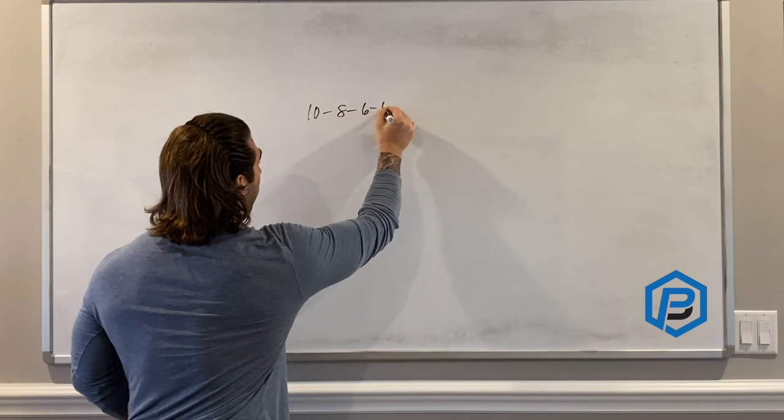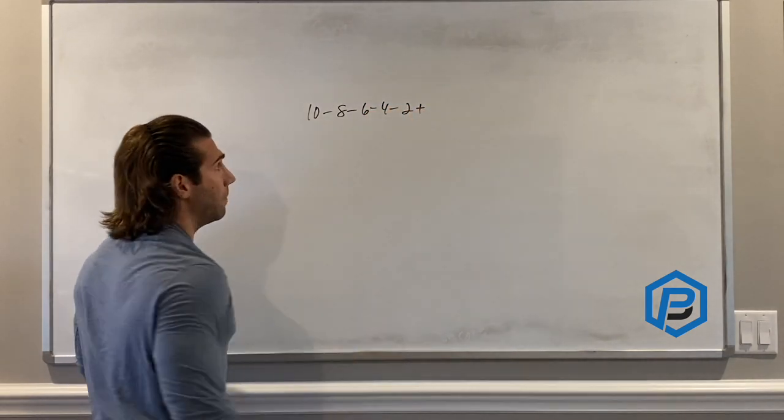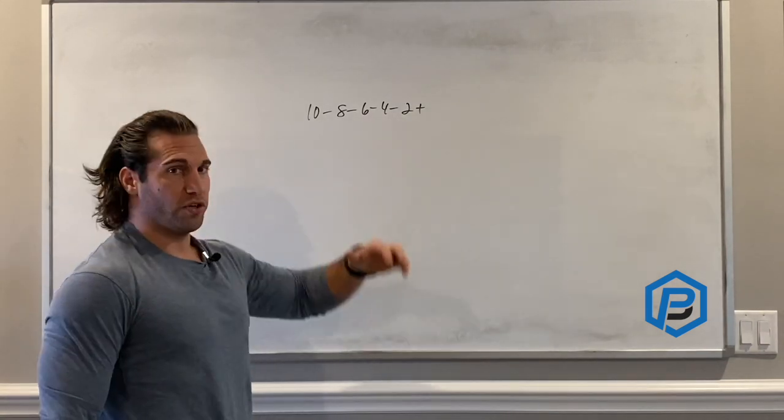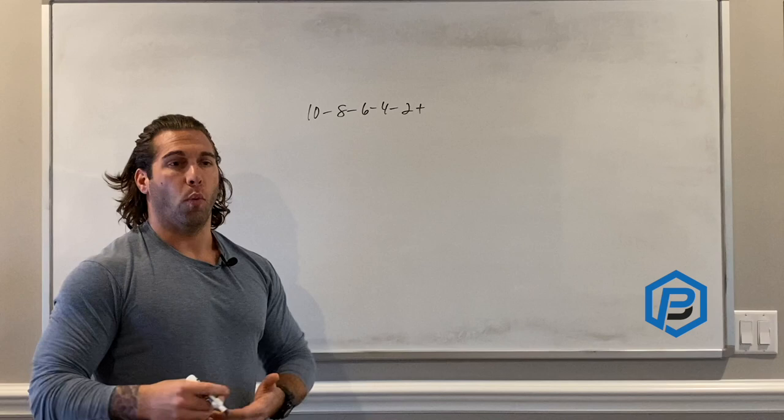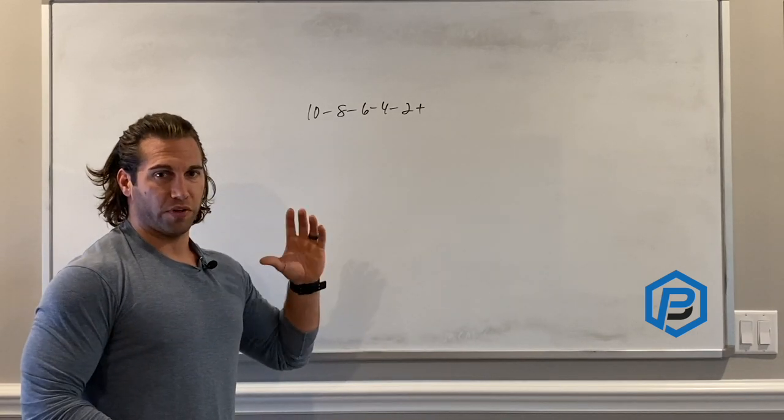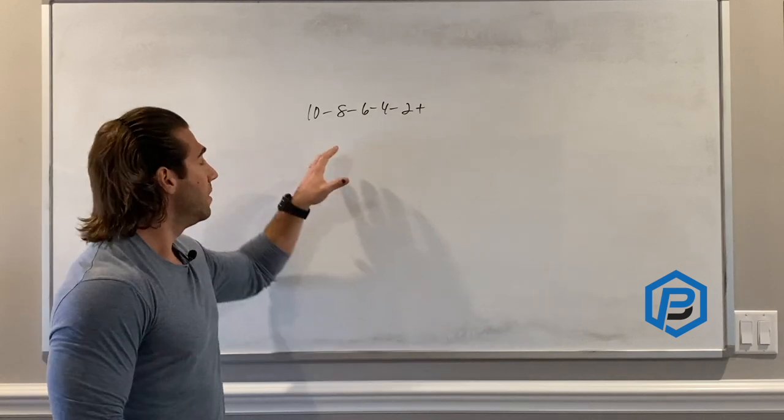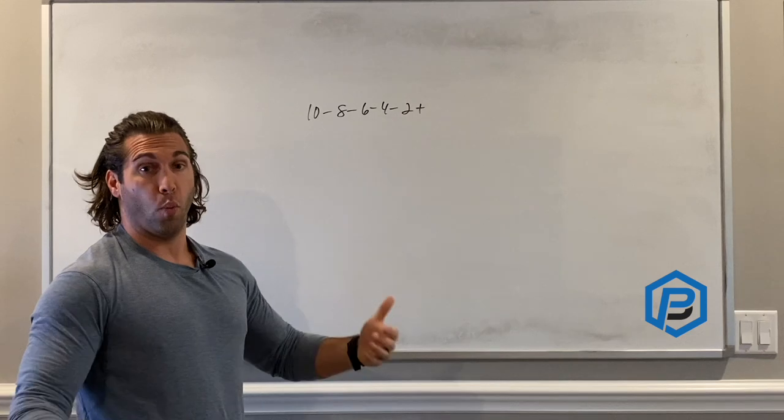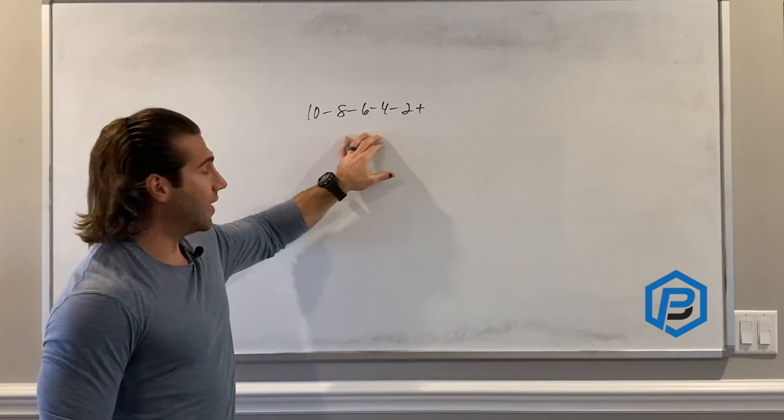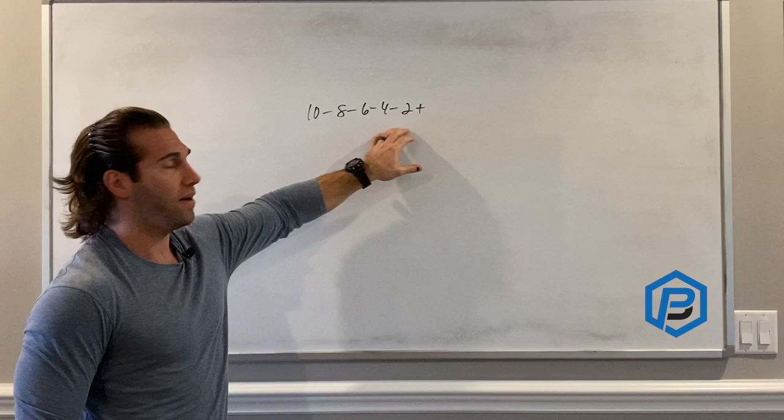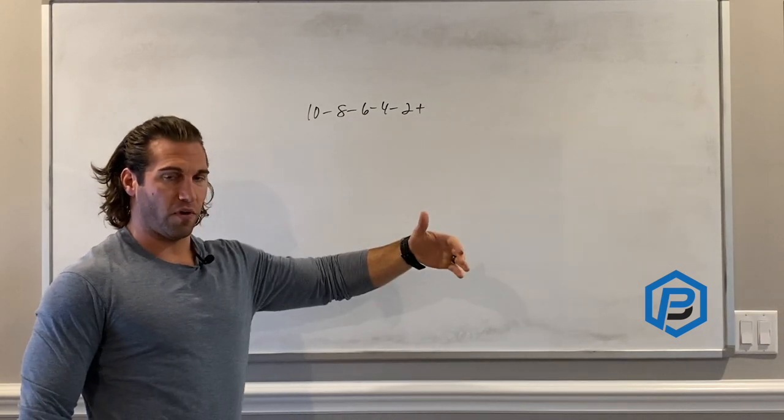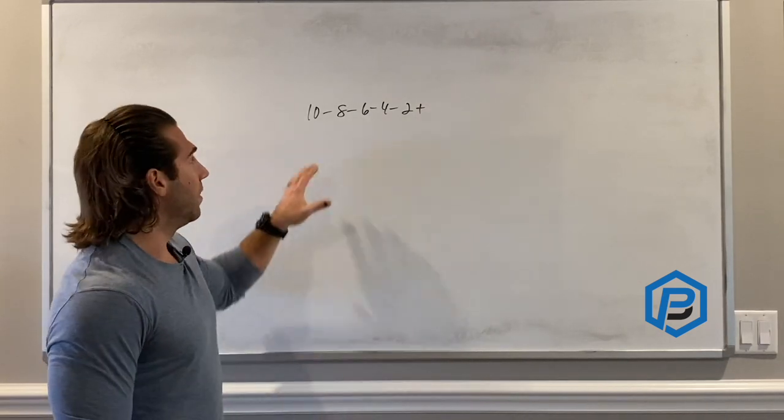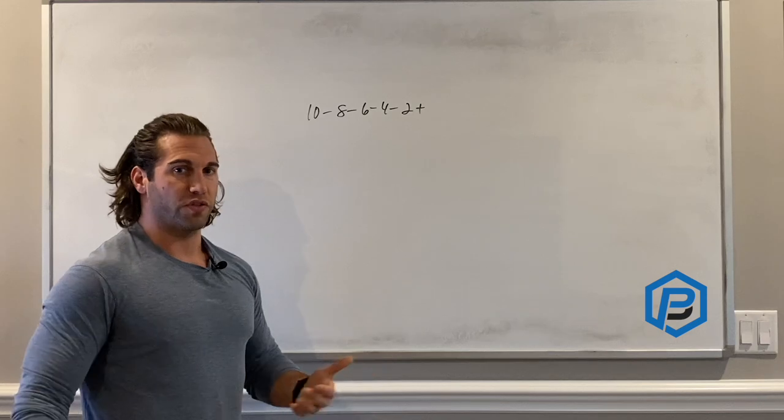This is our maximal strength rep scheme. Very simple, concise. Resting two to three minutes between sets. Build to that heavy single—don't worry about what it is. If it's 80% of your 1RM and it feels heavy that day and you do three reps, don't worry about it. Don't worry so much about the actual number. Know that if you're putting in the time and dedicating time to your assistance exercises where we're going to help bring up your limitations, then the rest will speak for itself.